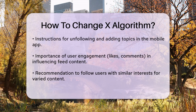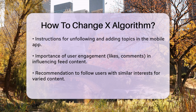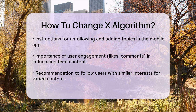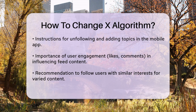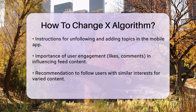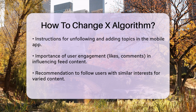Your engagements on X, such as likes and comments, also influence what you see. To change this, start engaging with different users who have similar interests to yours. Unfollow accounts that don't interest you and follow new ones. This will signal to the algorithm that you want to see different types of content.